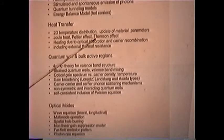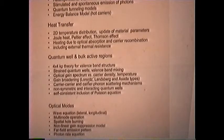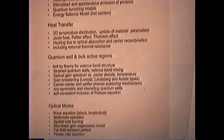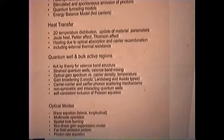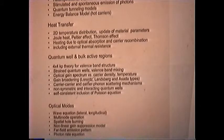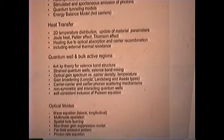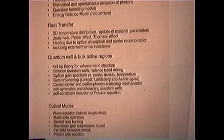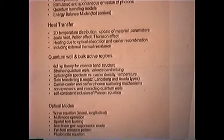Heat transfer features include Joule heat, Peltier effect, Thompson effect — all possible heat sources — heating due to optical absorption, and carrier recombination heating. You can also plug in an external thermal resistance, which is very helpful because thermal simulation requires accounting for the whole device while the optical waveguide is much smaller. The program uses different meshes for different physics. An approximation is to simulate only the center part and approximate the rest with a thermal resistance if you have measured it.